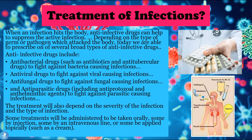So how can we treat infections today? When an infection hits the body, anti-infective drugs can help suppress the active infection. Depending on the type of pathogen, we can prescribe several broad types: antibacterial drugs such as antibiotics and anti-tubercular drugs to fight bacteria; antiviral drugs to fight viral infections; antifungal drugs to fight fungal infections; and anti-parasitic drugs — including anti-protozoal and anti-helminthic agents — to fight parasitic infections.